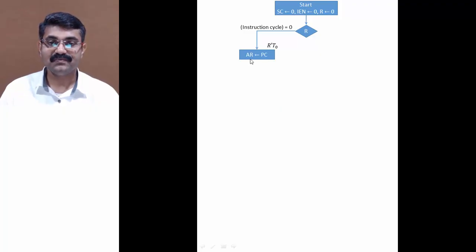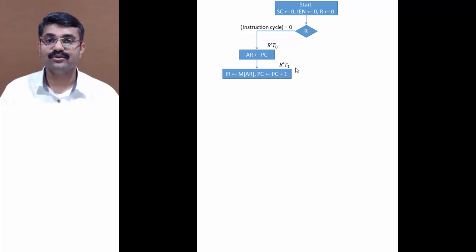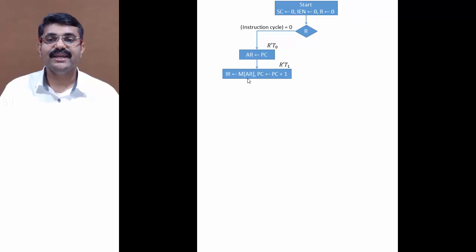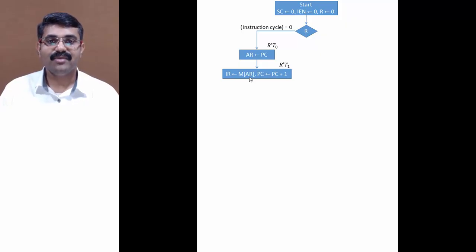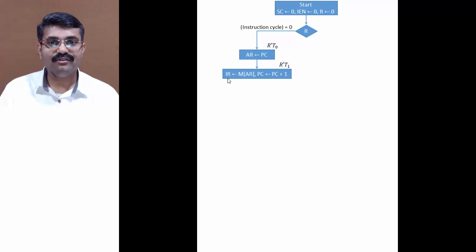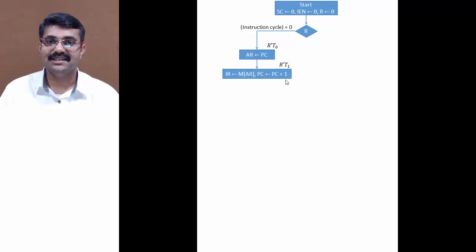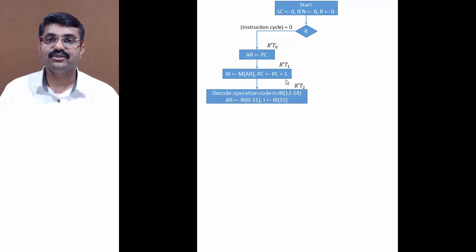At time R' T1, the instruction is fetched from memory and stored into the IR register — the memory address pointed to by AR holds our instruction, which is transferred to the instruction register. Along with that, PC is incremented by one to point to the next instruction. This completes the fetch part.